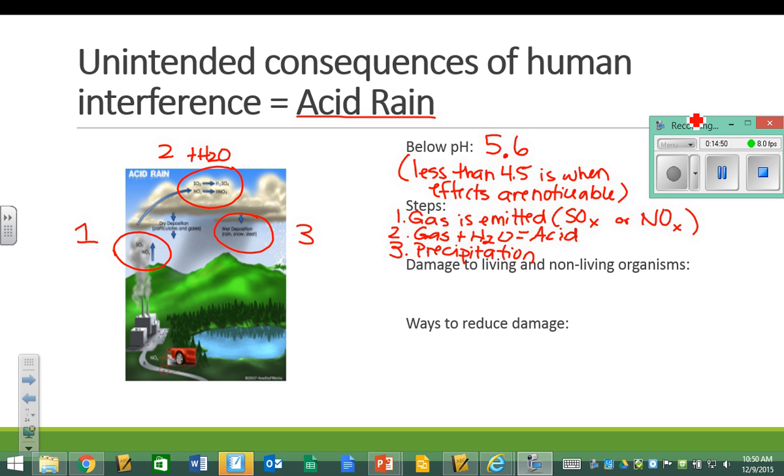Now, there are things that can happen to living and non-living organisms. We'll start with living organisms. There are a couple of main things that would happen to a living organism if it was being affected by acid rain.